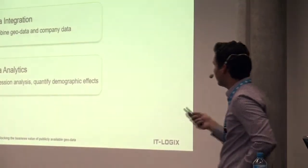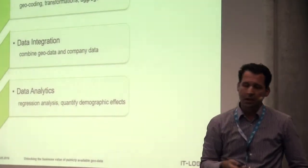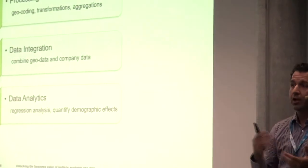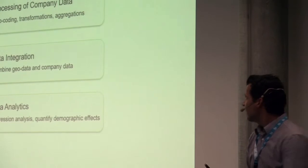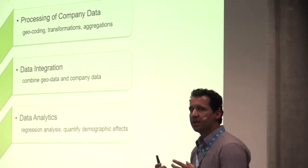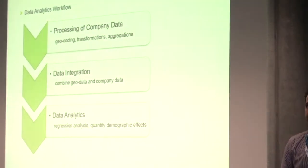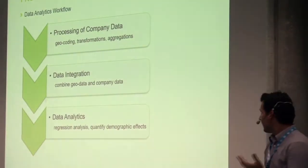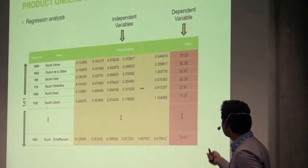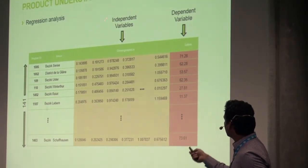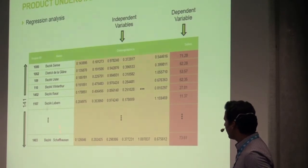The three main steps are: first, geo-code the locations of the retailers and aggregate the sales at the regional levels; second, integrate the demographic data and the sales data; and third, do data analytics and quantify the demographic effects on the products. This is a typical regression analysis where the dependent variable is sales and we try to explain sales with respect to demographics across all regions.